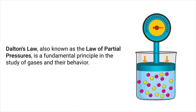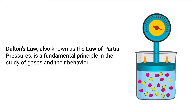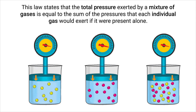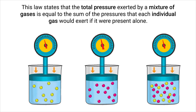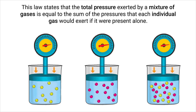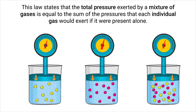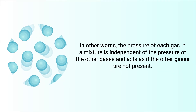Dalton's Law, also known as the law of partial pressures, is a fundamental principle in the study of gases and their behavior. This law states that the total pressure exerted by a mixture of gases is equal to the sum of the pressures that each individual gas would exert if it were present alone.